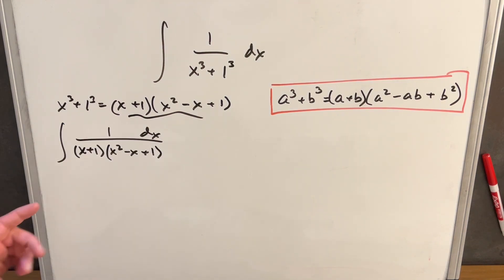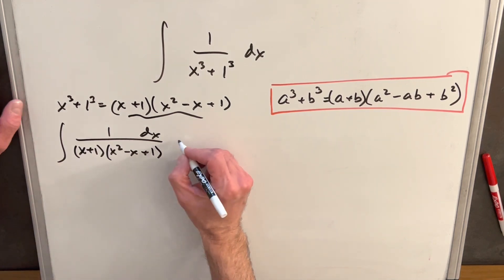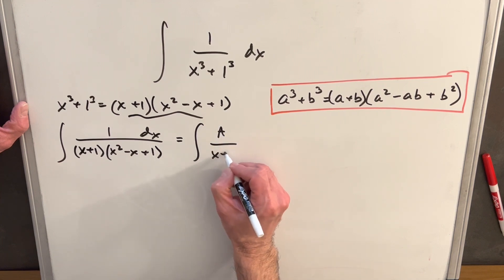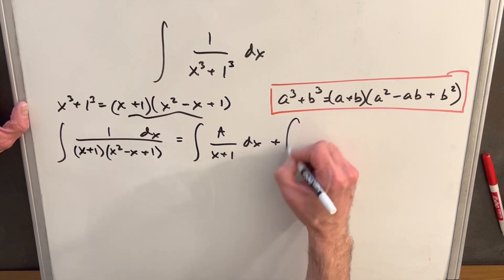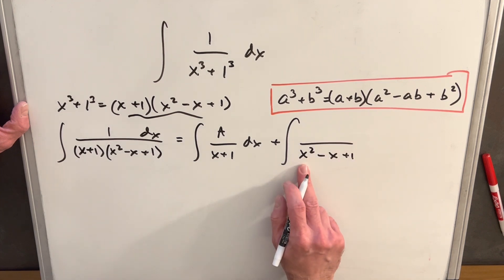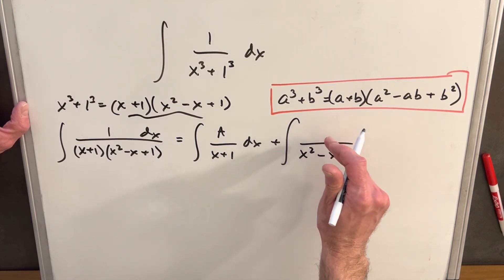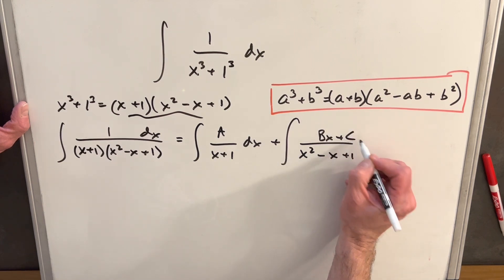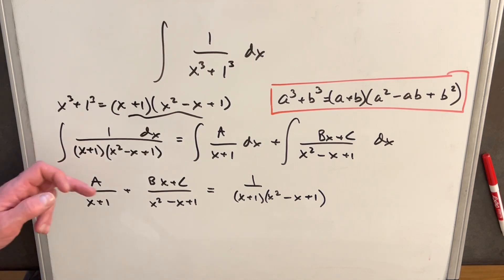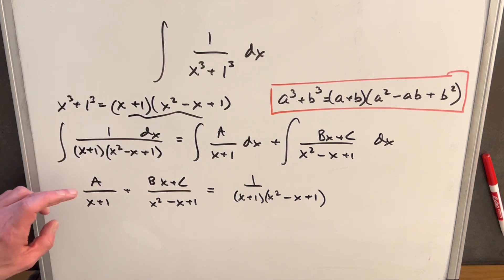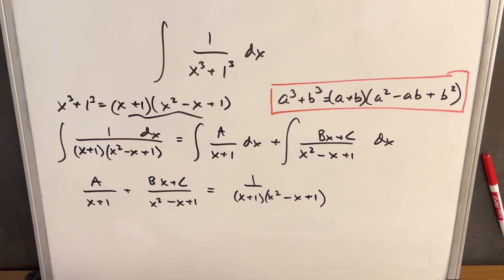I'm not sure exactly how to integrate this directly, but what I can do is set this up for partial fractions. We'll separate this into two integrals: we'll have A over x plus 1 dx, and then a second term with denominator x squared minus x plus 1. Since this is a second-degree term, we want our numerator to be first degree, so we write it as Bx plus C. All we need to do now is solve for A, B, and C. We get a common denominator so that everything in the numerator equals 1.